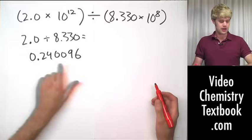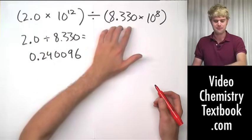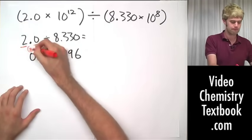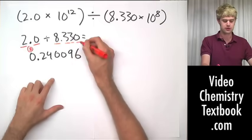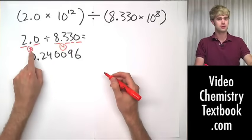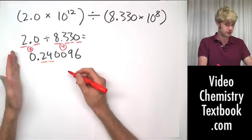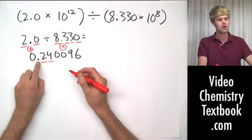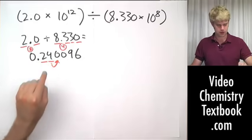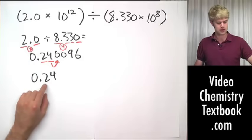Now for significant figures — how do we round this? We pay attention only to the significant figures in the mantissas of these numbers. 2.0 has two significant figures. 8.330 — the zero is to the right of a decimal place — has four significant figures. We round to the lower number, so we round to two significant figures. The zero to the left of the decimal is not significant, so our answer rounded to two significant figures is 0.24.